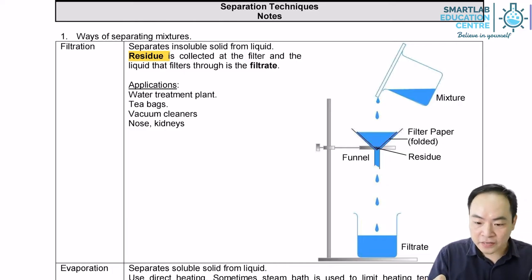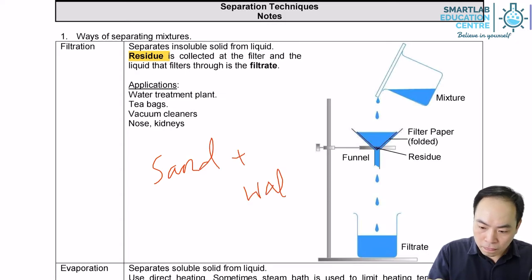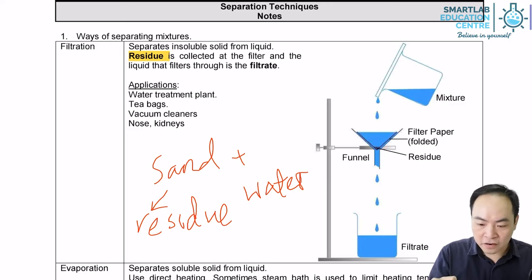For example, if you carry out the filtration of a mixture of sand and water, the sand will be collected as the residue because this is the solid that will stay on the filter paper, while the water that passes through will be collected as the filtrate.